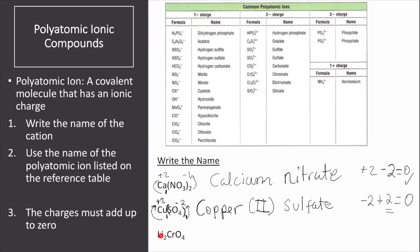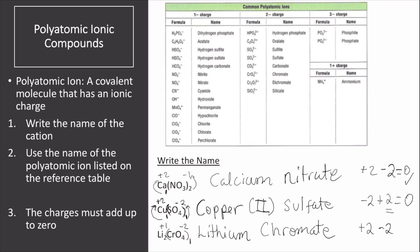The last compound is lithium. Lithium only has a plus 1 charge, and the next ion is chromate from the table, so this would be lithium chromate. Checking for neutrality: lithium is plus 1 and chromate is negative 2, so there is one chromate ion for every two lithiums. Multiplying 2 times positive 1 gives plus 2, and 1 times negative 2 gives negative 2, which equals zero.